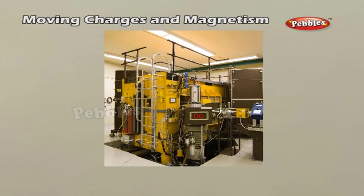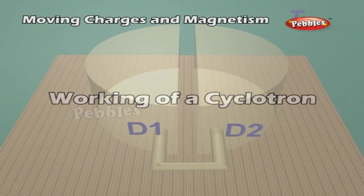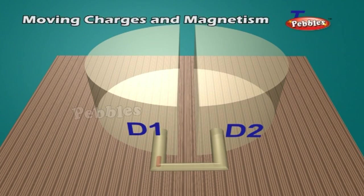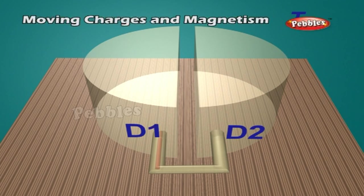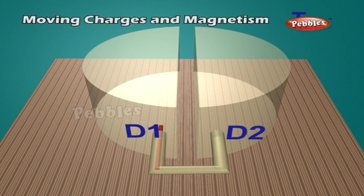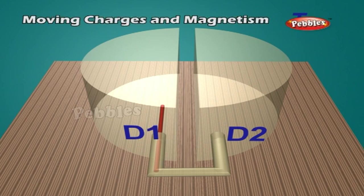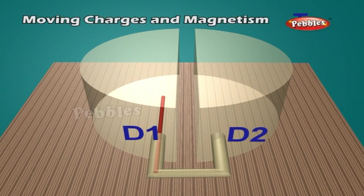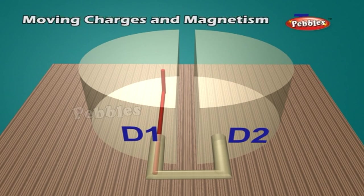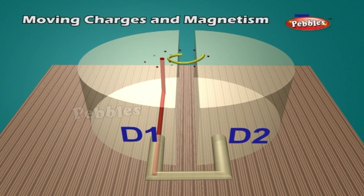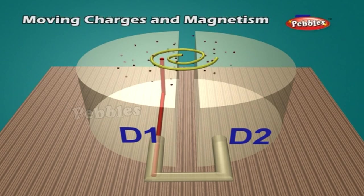A modern cyclotron for radiation therapy is shown. In its working, a high-frequency alternating voltage applied across the D-electrodes alternatively attracts and repels charged particles. The particles injected near the center of the magnetic field accelerate only when passing through the gap between the electrodes. The perpendicular magnetic field combined with the increasing energy of the particles forces them to travel in a spiral path.